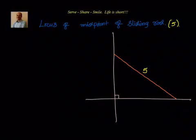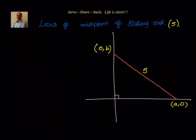We have been given that the length of the rod is 5 units. The wall is vertical and the ground is horizontal. In coordinate geometry, the coordinates on the ground will be (a, 0) and on the wall (0, b). These a and b are different values which satisfy the geometric condition that the length of the rod remains 5 units.